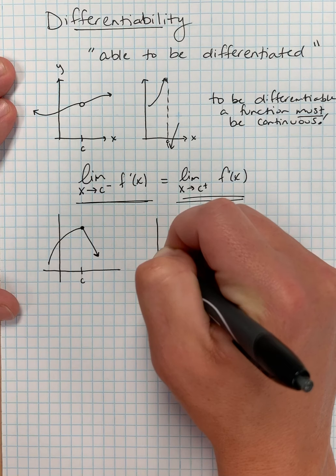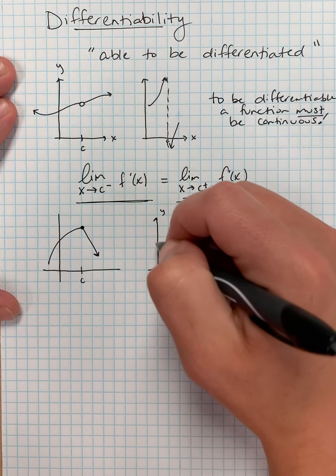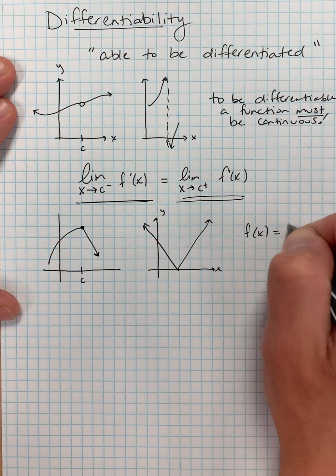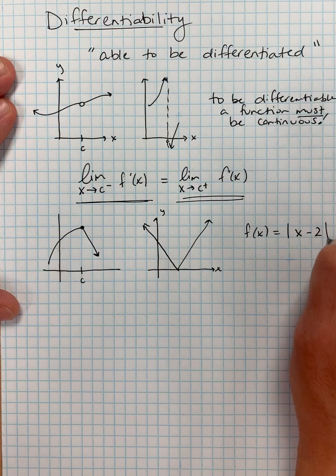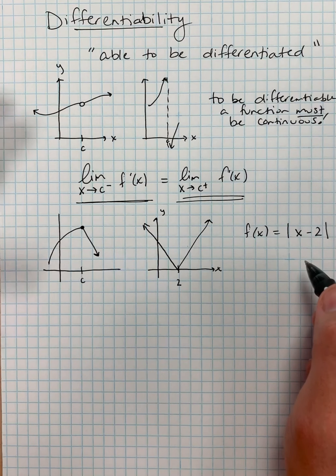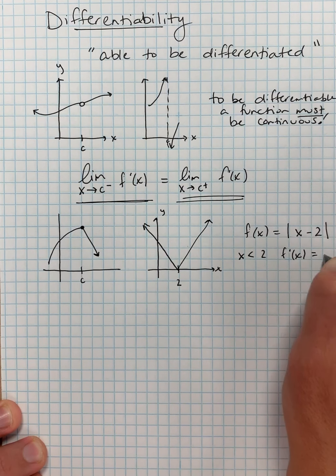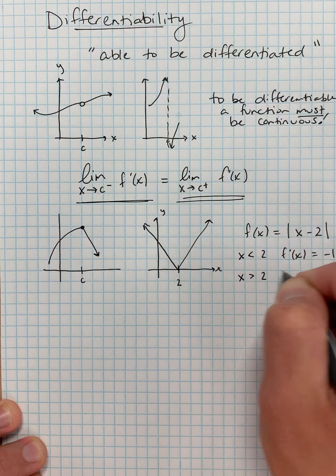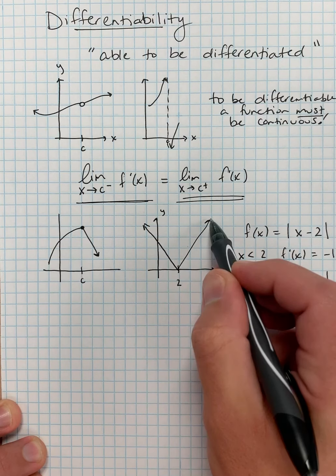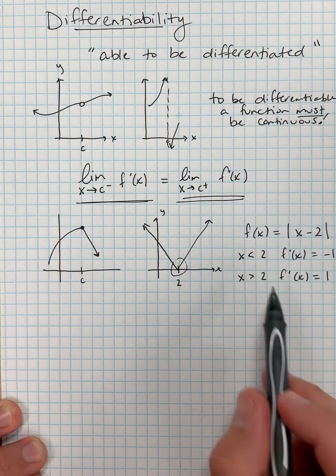Another function that may not be differentiable is an absolute value function — more specifically, f of x equals the absolute value of x minus 2. At x equals 2, the cusp of this absolute value, this function is not differentiable. The derivative on the left-hand side, when x is less than 2, f prime of x equals negative 1. But when x is greater than 2, f prime of x equals 1. So with a negative slope on the left and a positive slope on the right, the function is not differentiable at that point.